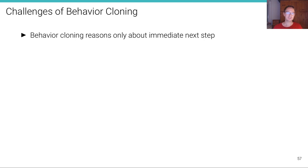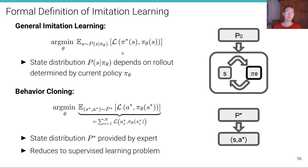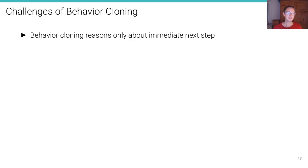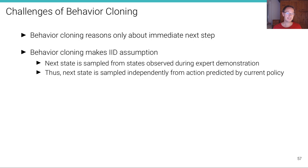So what are the challenges of behavior cloning? Obviously, this is much simpler. We don't need to actively query the experts during training. We can just take a fixed data set and do supervised learning. That's much easier. Behavior cloning reasons only about the immediate next step. Which means and it means that also behavior cloning makes the IID assumption and this is critical. The next state is sampled from the states observed during the expert demonstration. Therefore, the next state is sampled independently from the action predicted by the current policy.